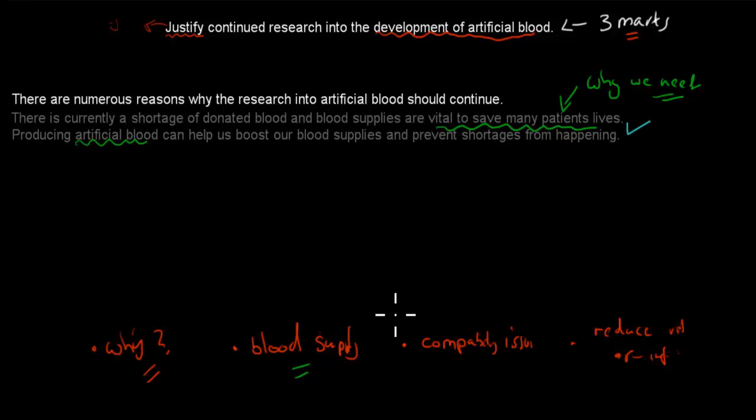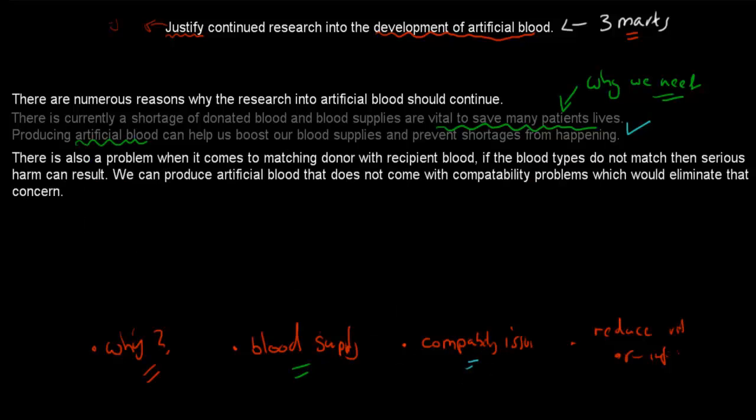I've gone over the first point. Next one was the compatibility issues. I first wrote, there's also a problem when it comes to matching donor with recipient blood. That was all blood type A, B, AB, and O. If the blood types do not match, then serious harm can result. If you have someone who is O and they get AB blood, then they can die from that.